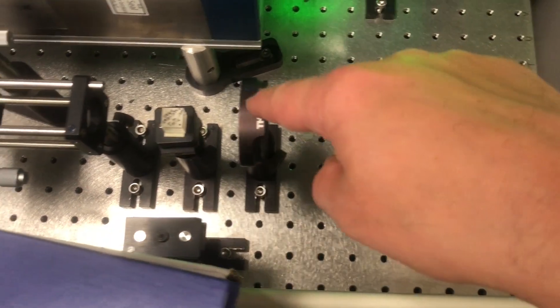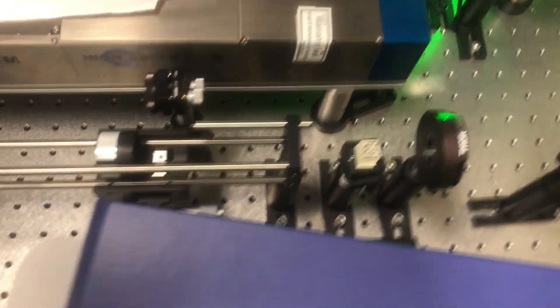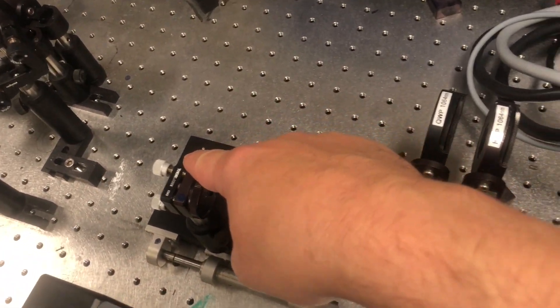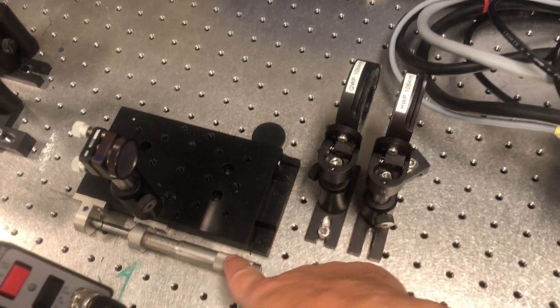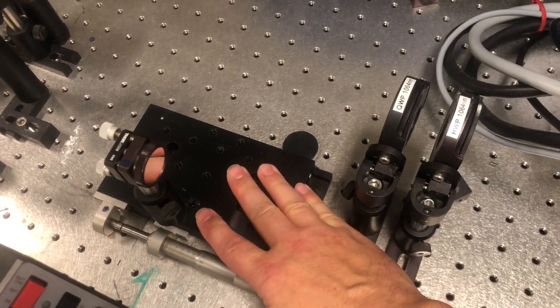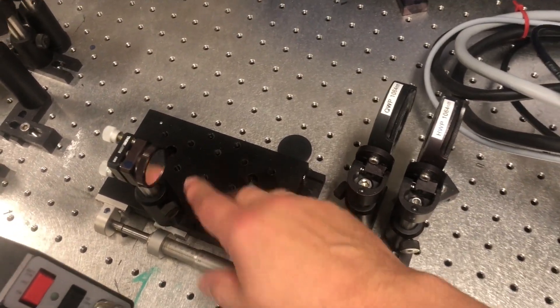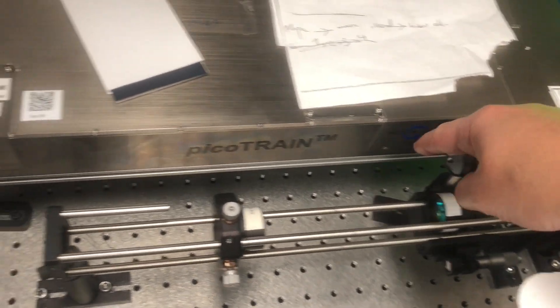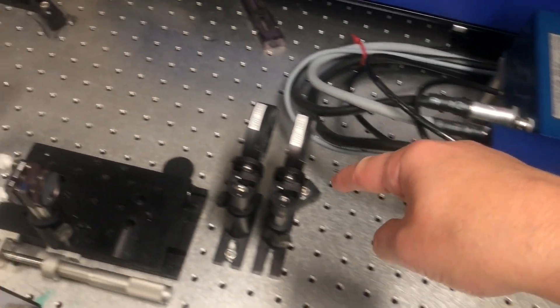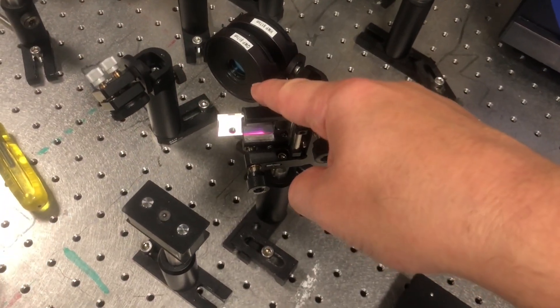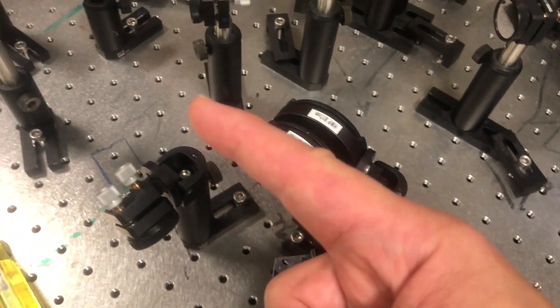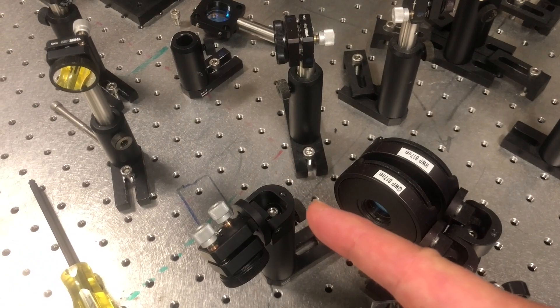It goes through a wave plate, a half wave plate, and a cube just to adjust the power. Then it goes through a telescope, and then it hits this mirror that is on an adjustable stage so we can adjust the position and the delay. Then it is reflected to another mirror that sends it towards a dichroic mirror that lets through 1064 and will let it recombine with the 832 nanometer beam that's being reflected from the other side.